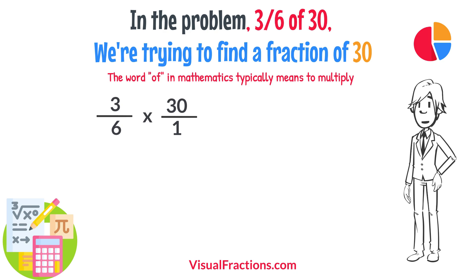Now, we proceed to multiply across. First, multiply the numerators, 3 times 30 equals 90.